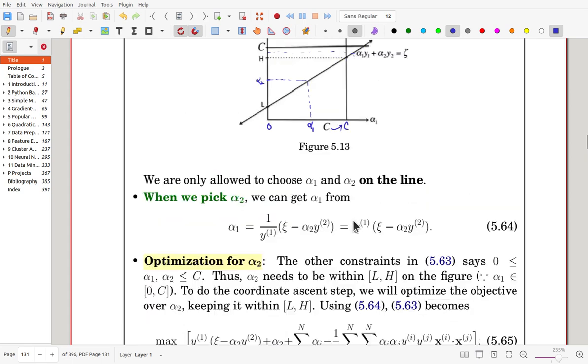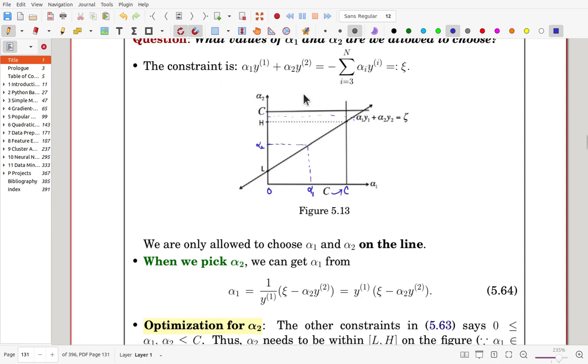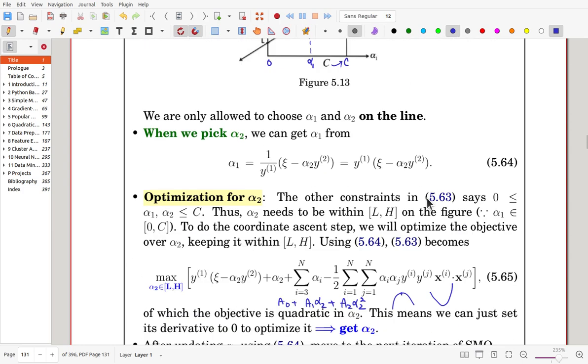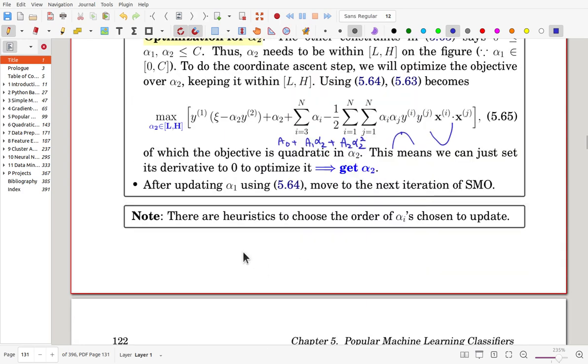And with another pair of alpha values, we try to update the value. There are heuristics to choose the order of alpha i to update. And this is huge. For this one, there are many publications. But if you are using scikit-learn, then I believe this is default solver and it's well organized and some heuristics are used to get optimized. And it's working very nicely.